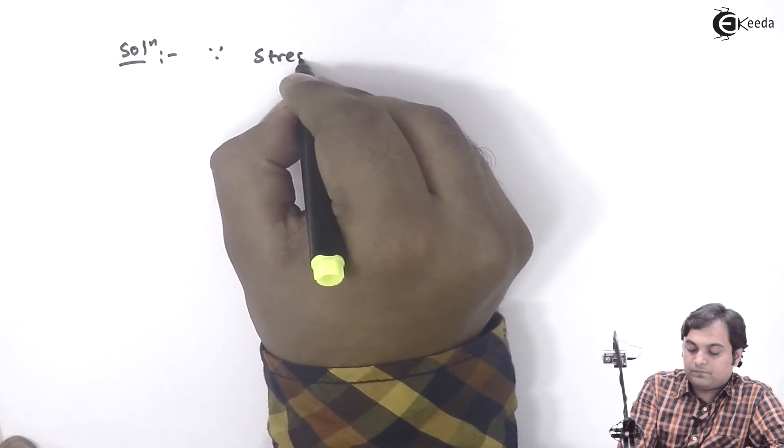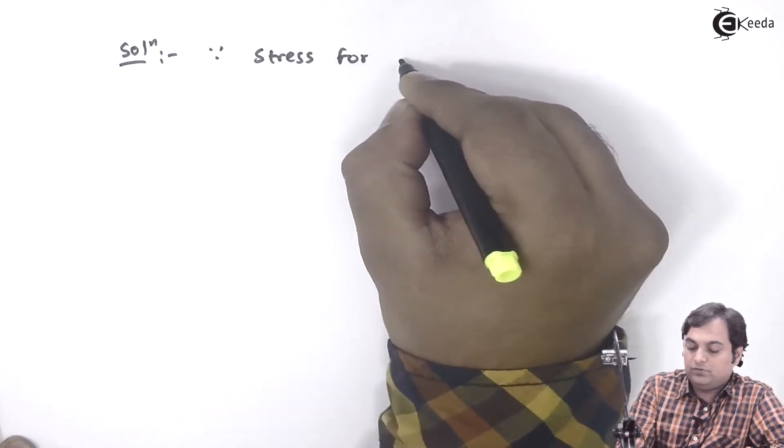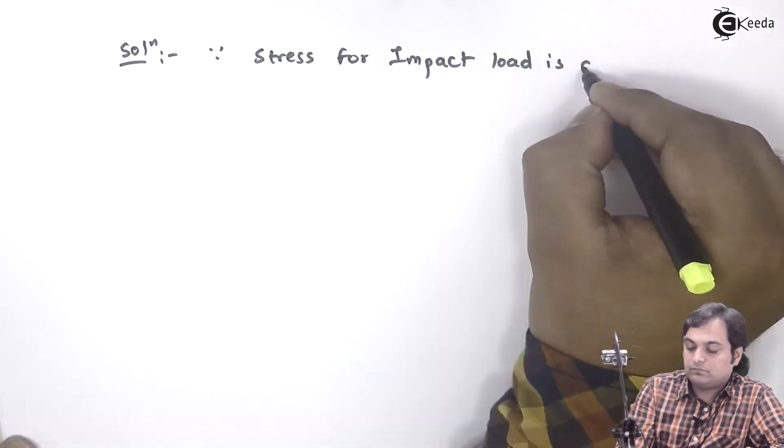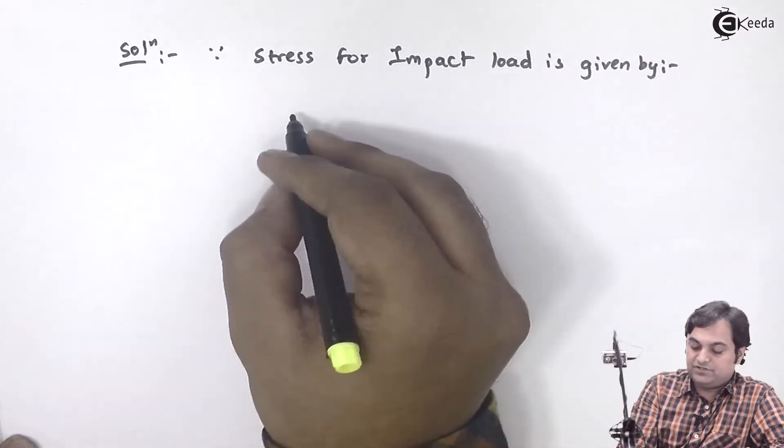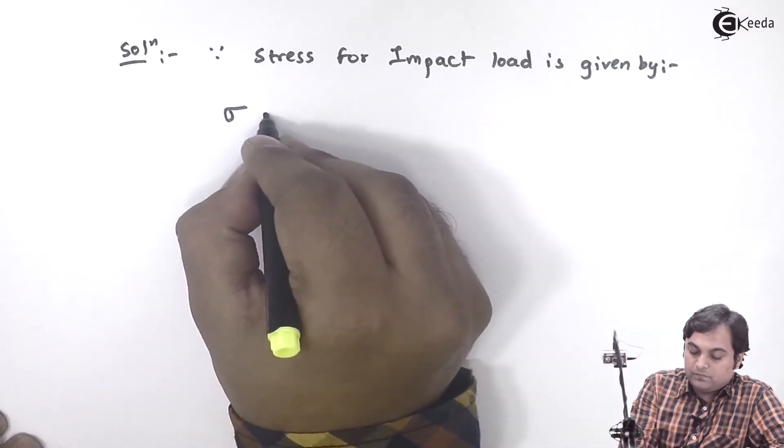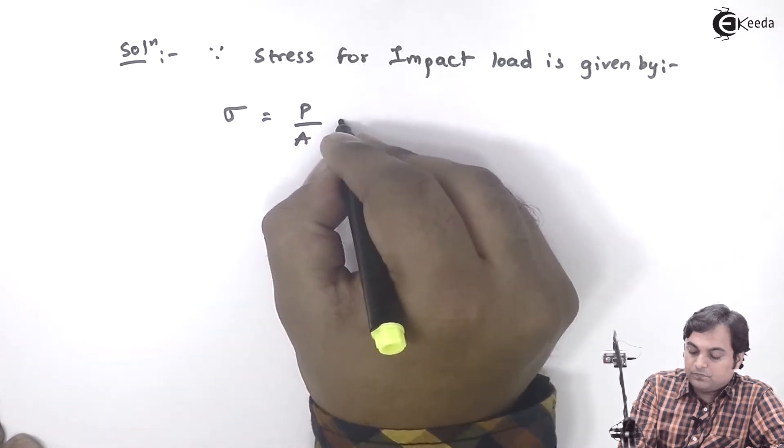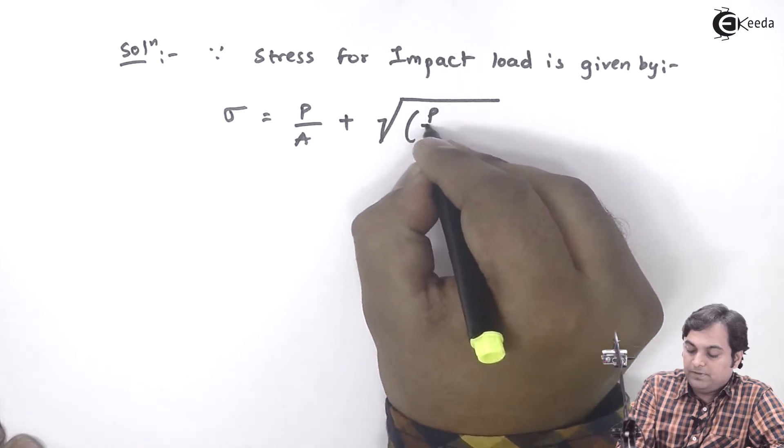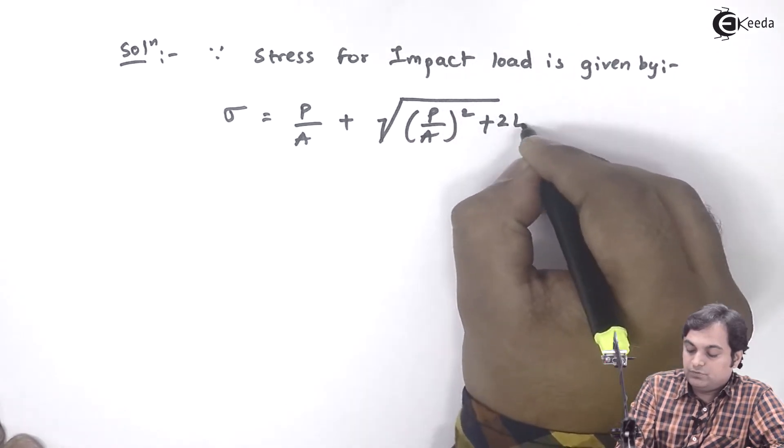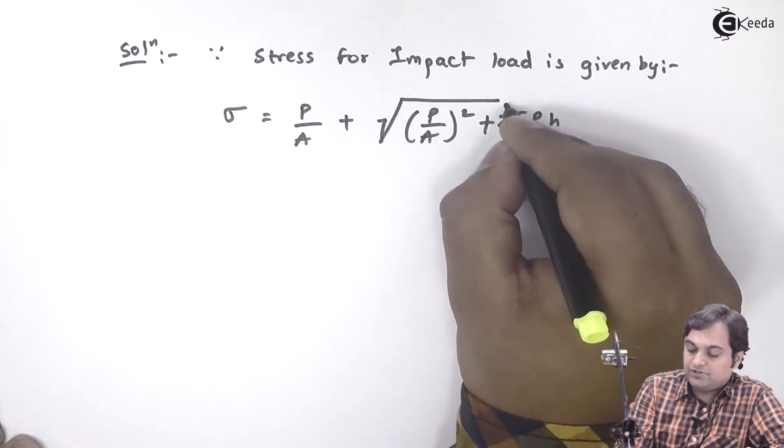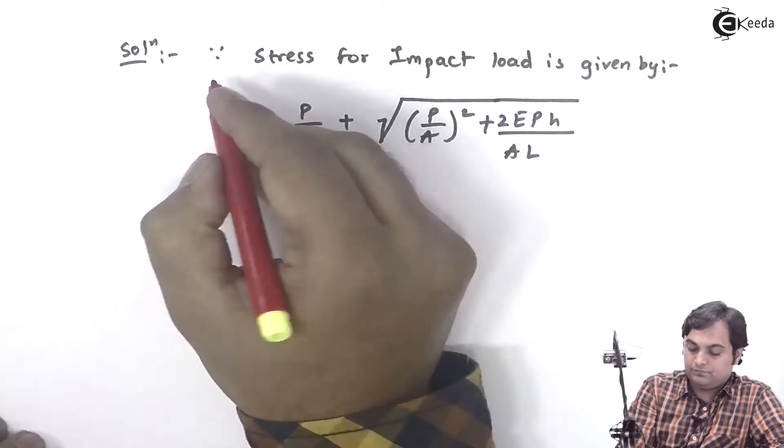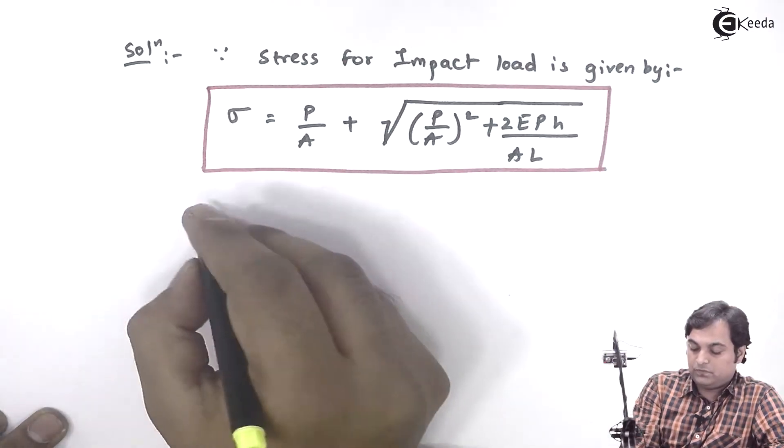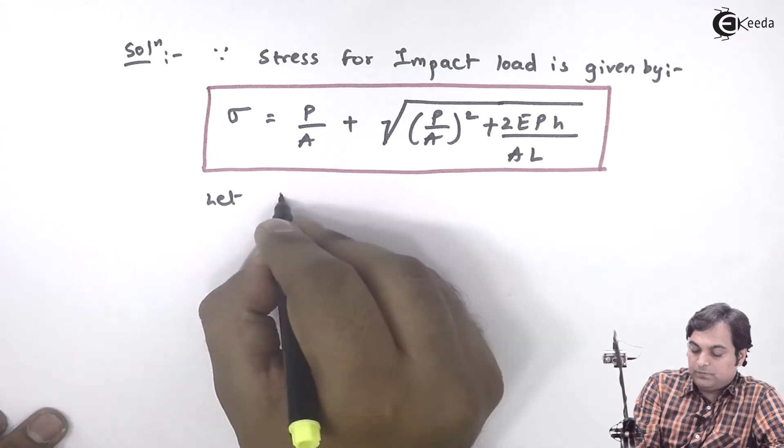for impact load is given by the formula: σ = P/A + √[(P/A)² + 2EPH/(AL)]. Here I will say that let P/A